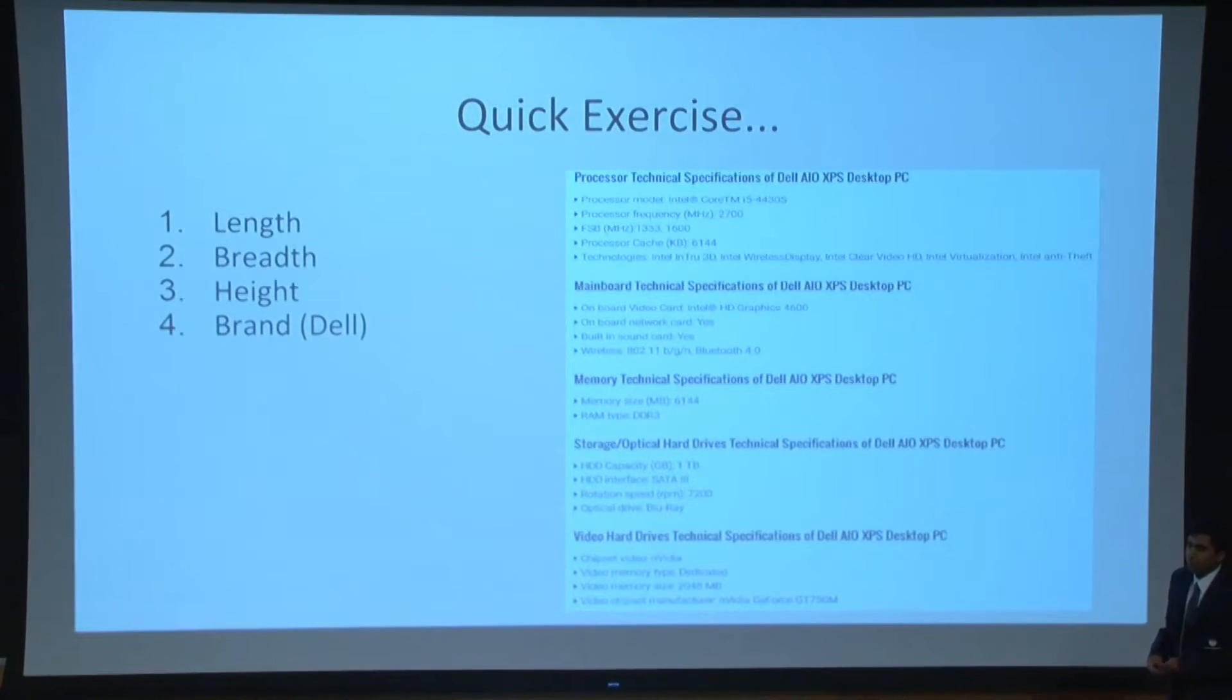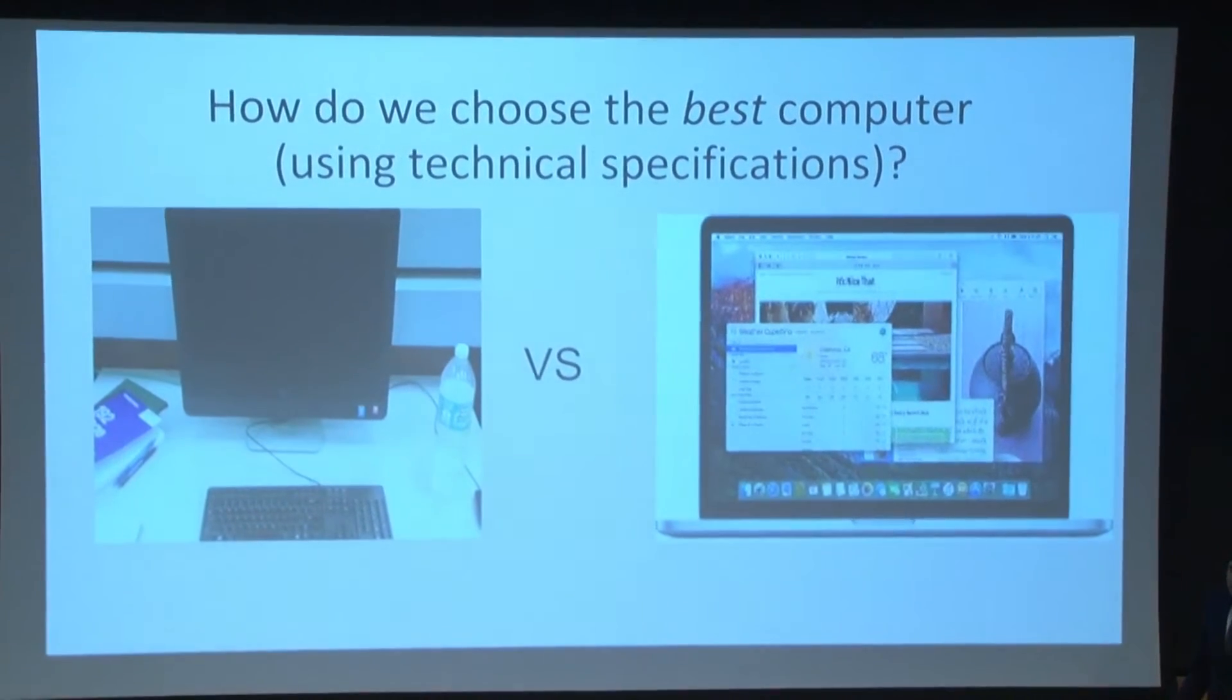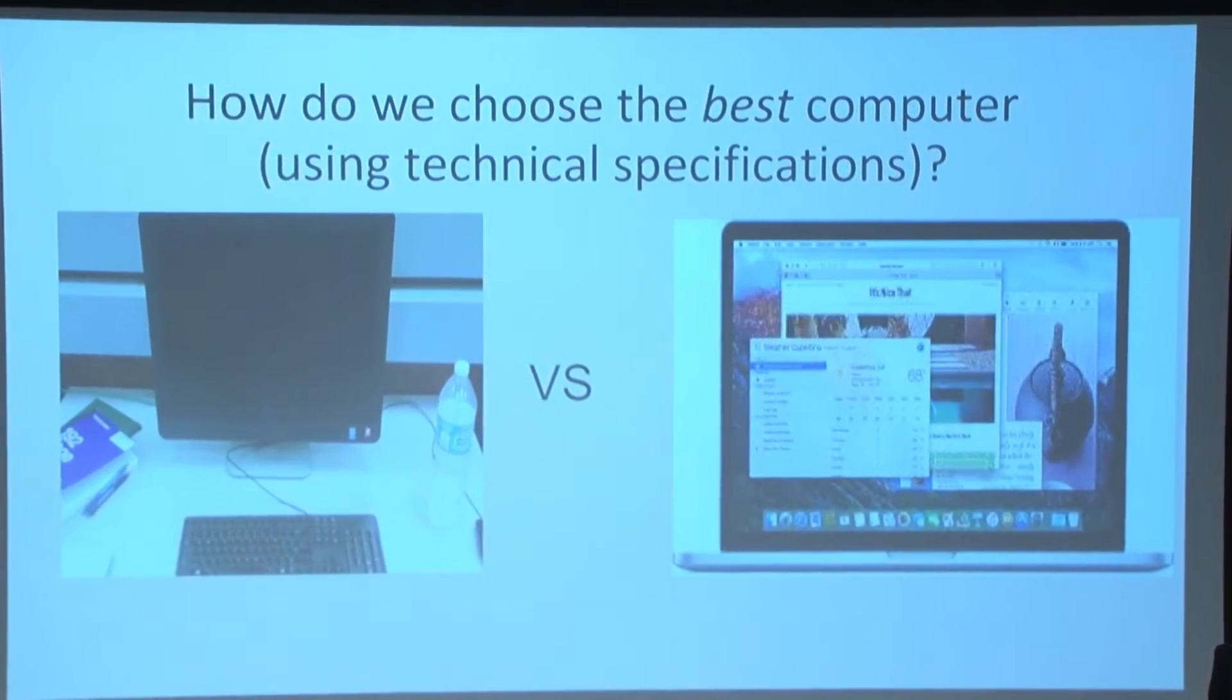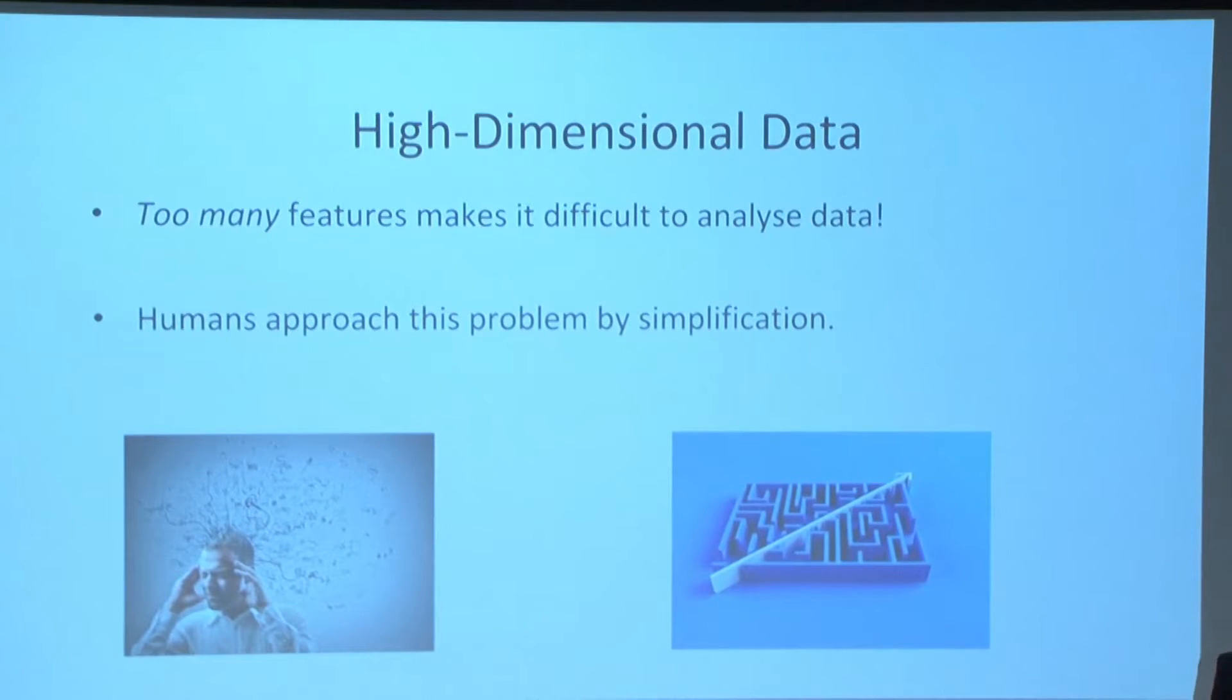However, what would happen if we instead categorized these computers according to multiple different features? I mean, it's 2016—we know heaps about the computer. So let's look at this. We have a whole bunch of different technical specifications, but now what's our big problem? Instead of having too little information to distinguish between all the different possible types of computers, now we have too much information.